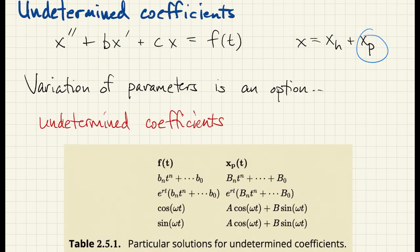Essentially, it's a method of judicious guessing. Based on what f is, you know what xp ought to look like, and it just has some constants in it that have to be determined by the equation.